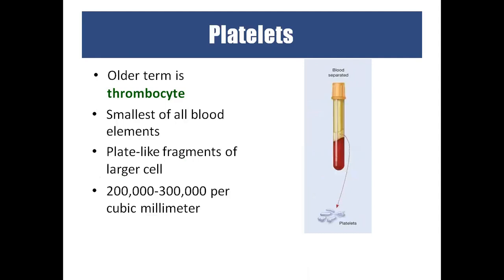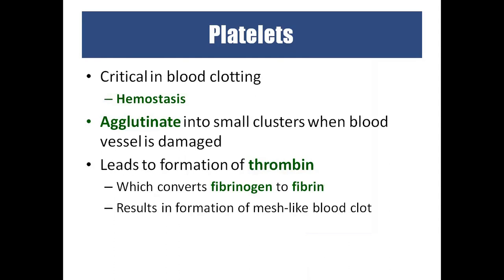Platelets, also called thrombocytes, are the smallest cells in blood. They look like plates, which is why they are named platelets. The normal count is 2–3 lakhs per cubic millimeter. In diseases like dengue and malaria, the platelet count falls drastically and the patient becomes critical. Platelets are responsible for blood clotting. When there is damage, thrombin is formed, which converts fibrinogen to fibrin. Fibrin forms a mesh that traps platelets, forming a clot that plugs the blood flow and prevents further blood loss.